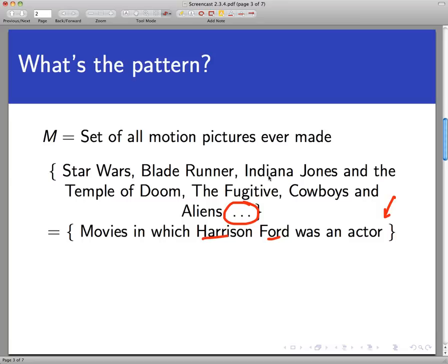So it's better to write this set not in terms of a roster of its elements but rather in terms of the property that all those elements have in common. The set of all movies in which Harrison Ford was an actor, that's a much clearer way and shorter way to write this set than roster notation.